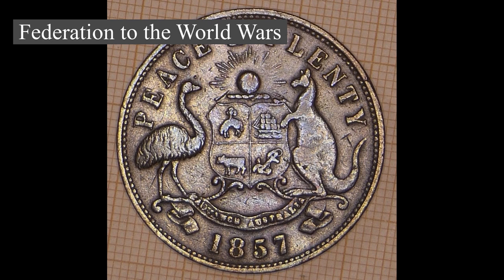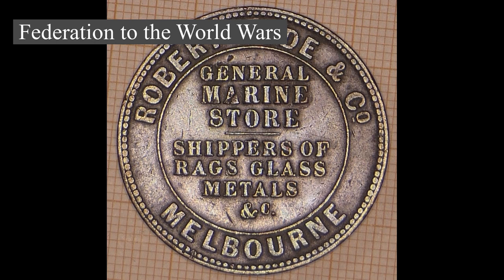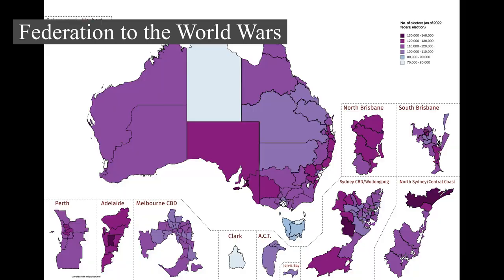The Northern Territory was transferred from the control of the South Australian government to the Federal Parliament in 1911. Australia became the colonial ruler of the Territory of Papua in 1902 and of the Territory of New Guinea, formerly German New Guinea, in 1920. The two were unified as the Territory of Papua and New Guinea in 1949 and gained independence from Australia in 1975.